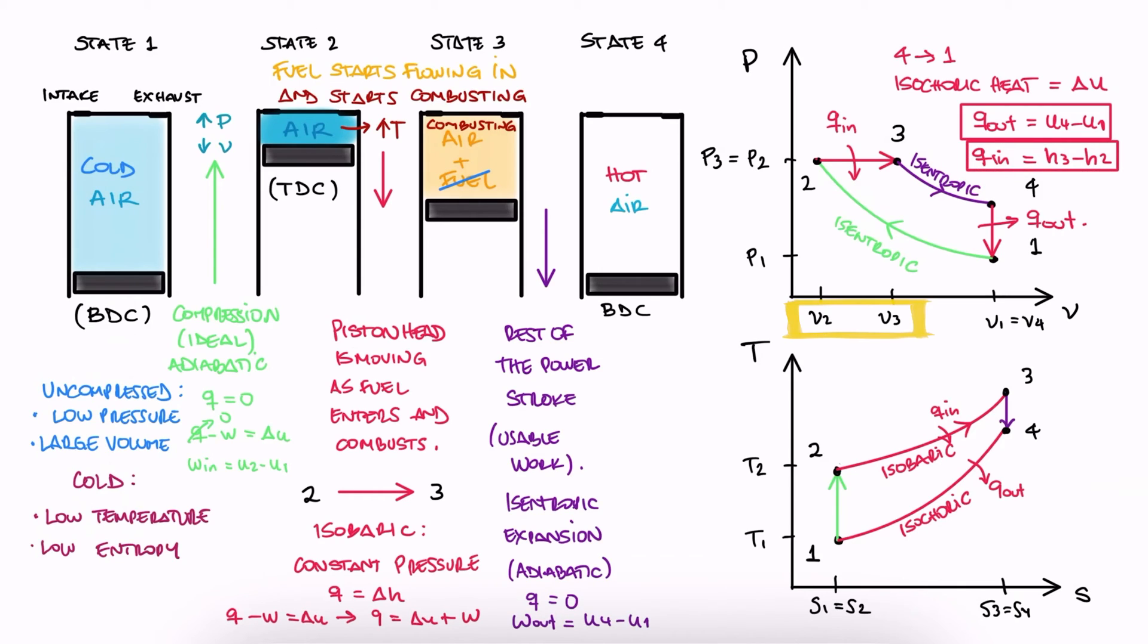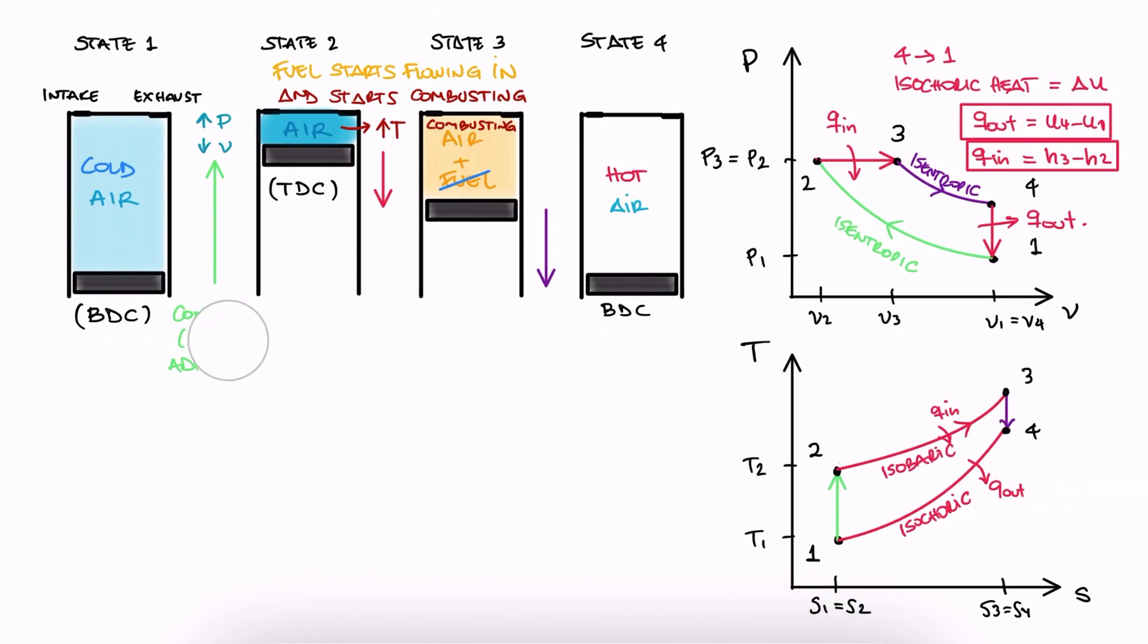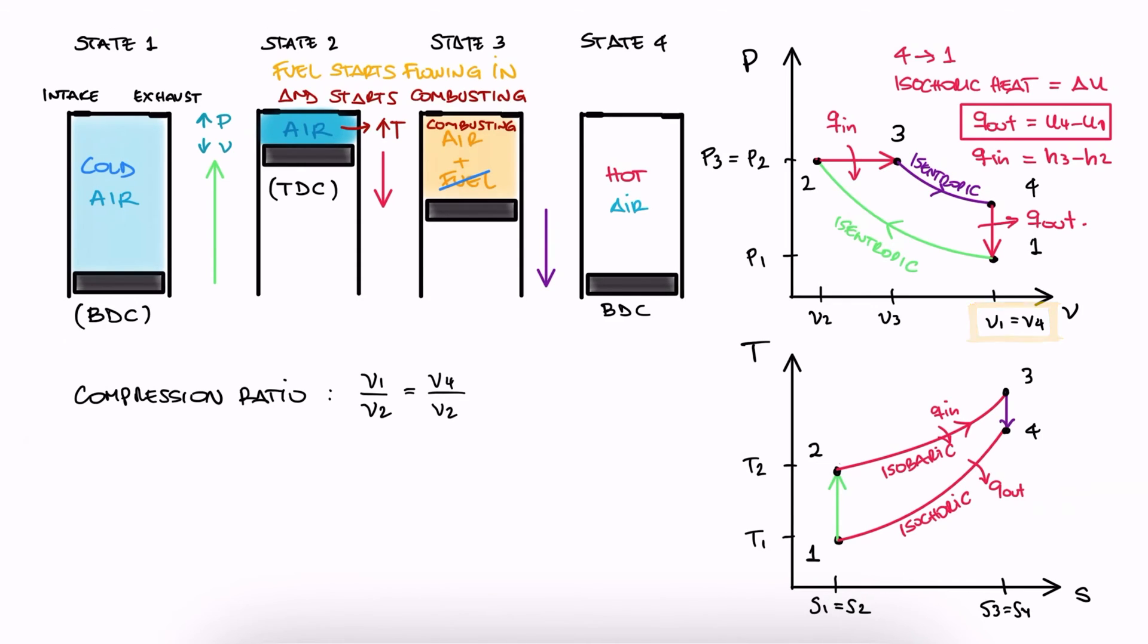Notice that between 2 and 3, the volume is changing. As opposed to the auto cycle, we don't have one volume ratio between the only two volume values. In this case, we have a total of three volume values, 1 equal to 4, 2, and 3. For this reason, we still refer to the compression ratio as V1 over V2, or V4 over V2 since V1 is also V4, but we introduce a new volume ratio called the cutoff ratio.